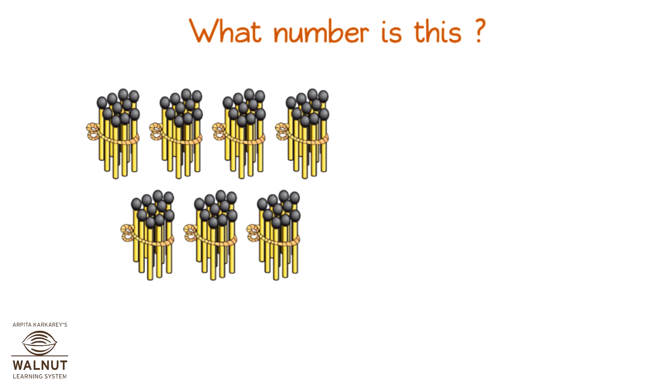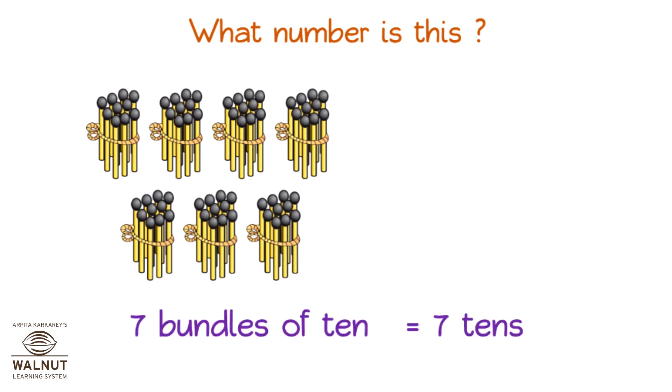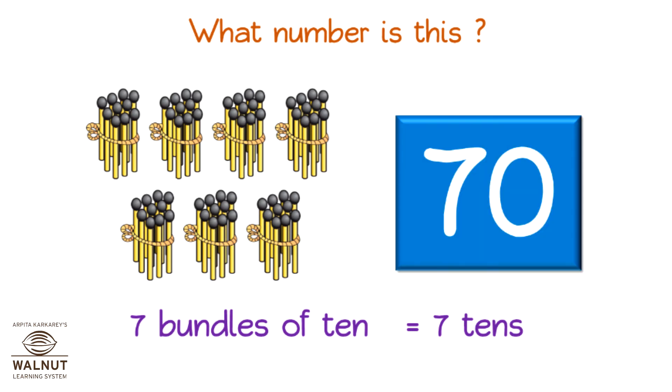What number is this? Seven bundles of ten is equal to seven tens. That is seventy.